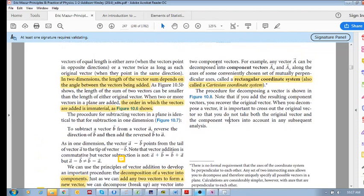Or, we can take a resultant vector and break it up into two component vectors. So, for example, vector A can be composed into two component vectors, AX and AY, along the axes of some conveniently chosen set of perpendicular axes, which we call the rectangular coordinate system or the Cartesian coordinate system.